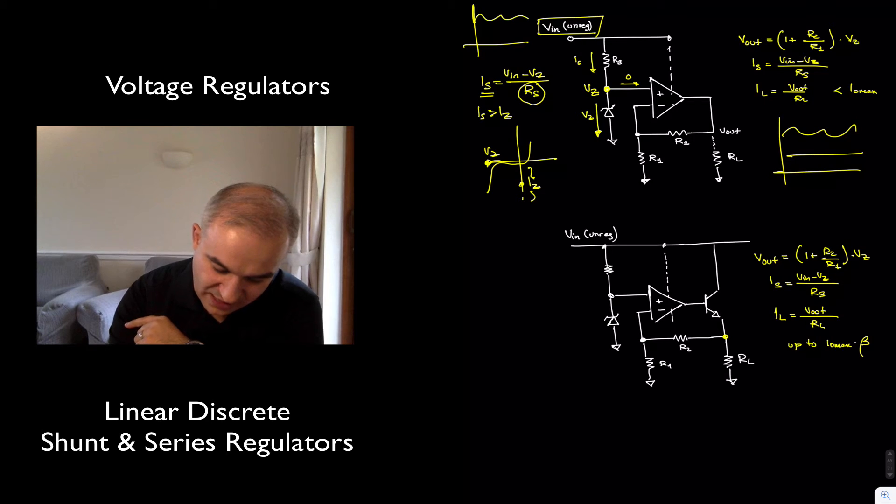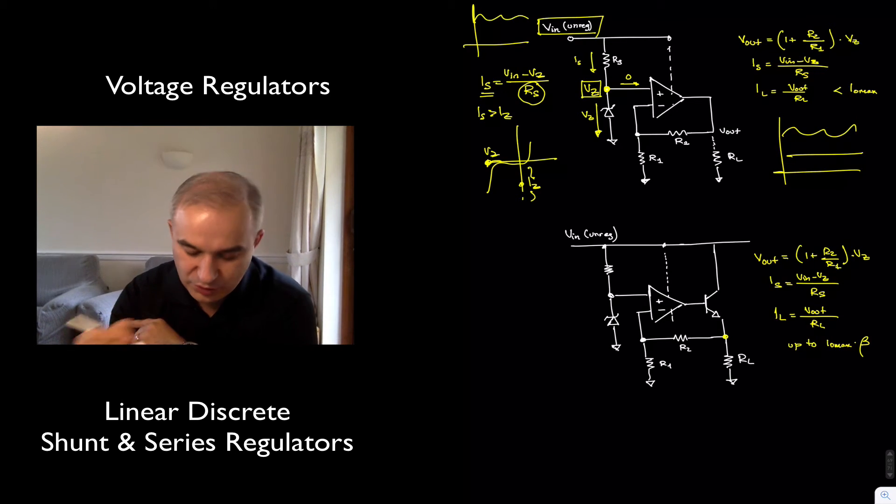So if we have in the non-inverting terminal VC, what is the voltage at the output? Well, this is just a non-inverting amplifier.